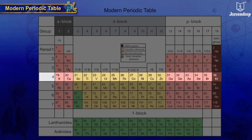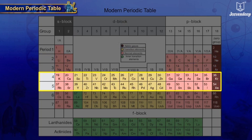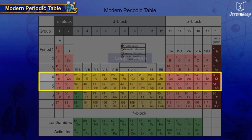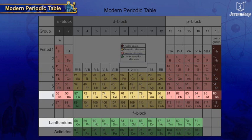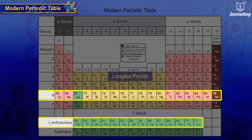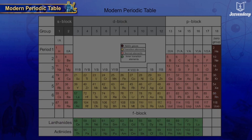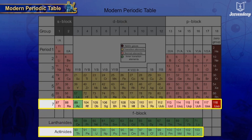Fourth and fifth periods are long periods containing 18 elements each. The sixth period is the longest period with 32 elements. Seventh is an incomplete period.